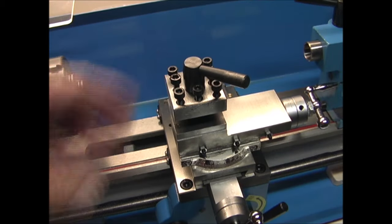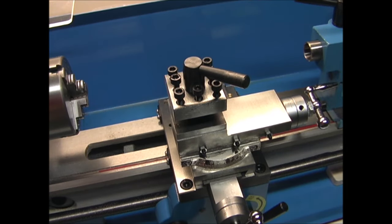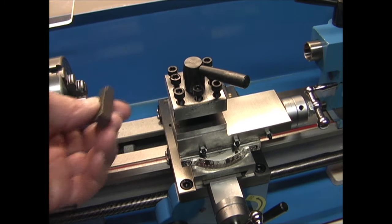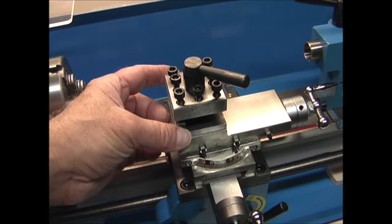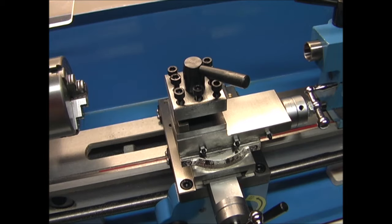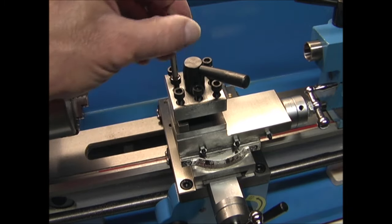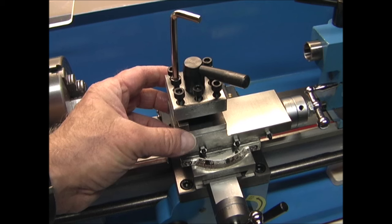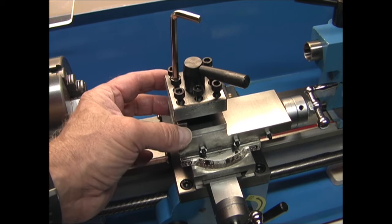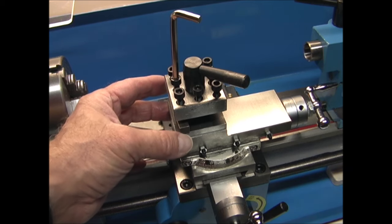Here's the tool holder. This lathe did not come with any cutting tools, you have to buy those separately. They just go in the slot and then you would tighten down these bolts. You may have to shim the tool up to get the correct height.